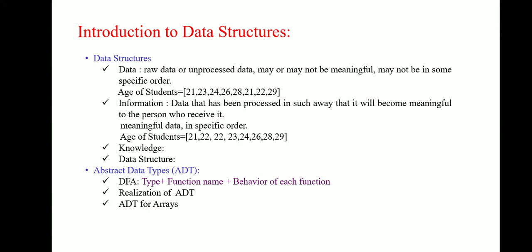Where data is nothing but raw data or unprocessed data. For example, age of the students which is taken as an array and this array consists of 21, 23, 24, 26, 28, 21, 22 and 29.